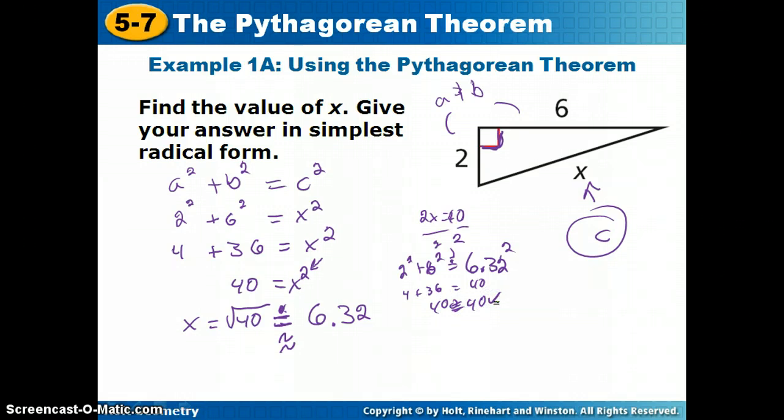Now it also says give me an answer in simplified radical form. That might be new to you guys too. So let's take some time on that. I'm going to write down some numbers here: 4, 9, 16, 25, 36, 49, 64, 81, and 100. What do they all have in common? They're all perfect squares.